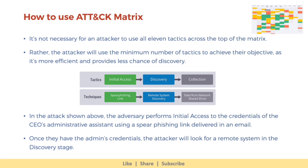In the attack shown above, the adversary performs initial access to the credentials of the CEO's administrative assistant using a spear phishing link delivered in an email. Once they have the admin's credentials, the attacker will look for a remote system in the discovery stage.